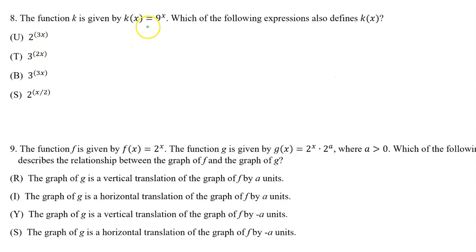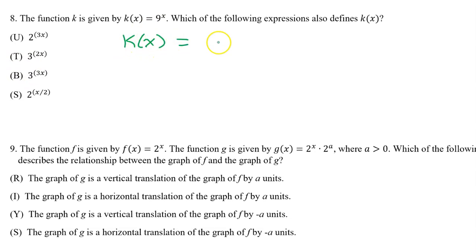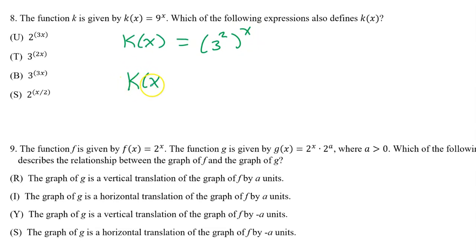Number 8 is a little more straightforward. k(x) equals 9 to the x power is equivalent to which of these? We can write 9 as 3 squared, so this would be 3 squared to the x power. When you raise a power to a power, you multiply, so we get k(x) equals 3 to the 2x power. The answer is T.